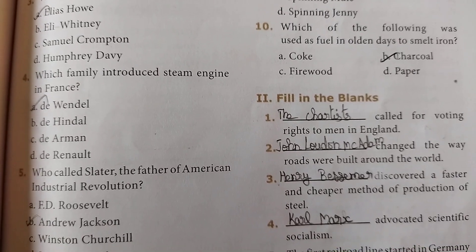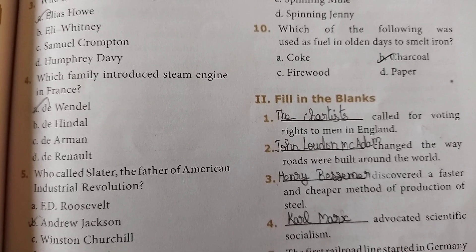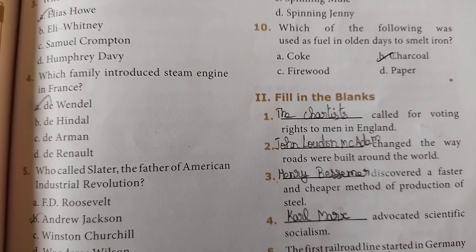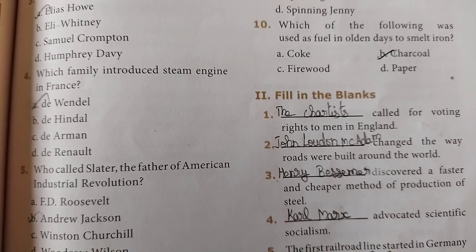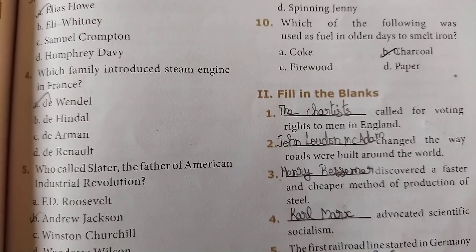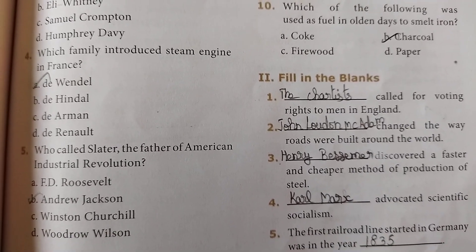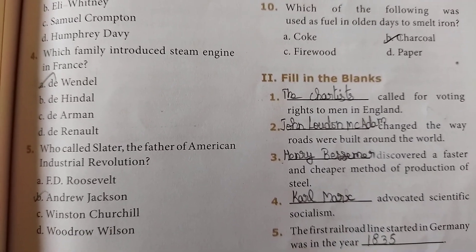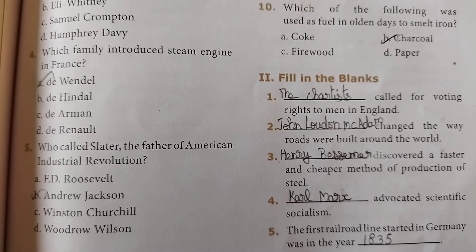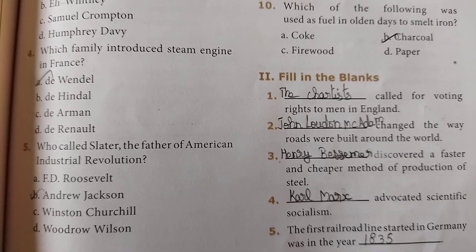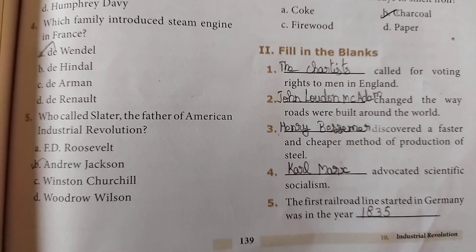Third one: dash discovered a faster and cheaper method of production of steel — Henry Bessemer. Fourth one: dash advocated scientific socialism — Karl Marx.